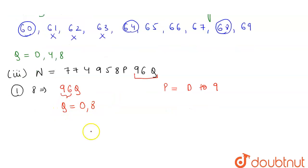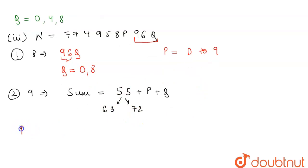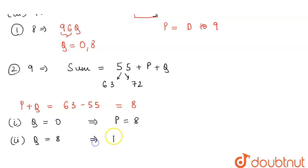For divisibility by 9, the sum of digits must be divisible by 9. We found the sum equals 55 plus p plus q. Since 55 is not divisible by 9, the next multiples of 9 above 55 are 63 and 72. For the sum to equal 63, p plus q must equal 8. Taking q equal to 0 gives p equal to 8, and taking q equal to 8 gives p equal to 0. This gives ordered pairs (8, 0) and (0, 8).